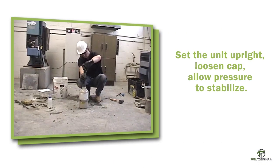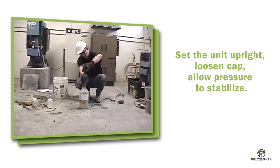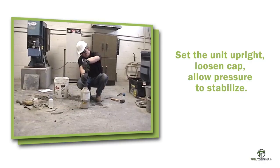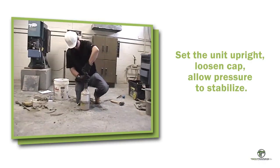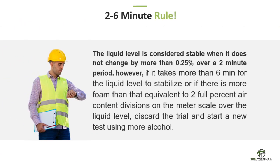Set the unit upright and loosen the cap to allow any pressure to stabilize. Allow the meter to stand while the air rises to the top and until the liquid level stabilizes. The liquid level is considered stable when it does not change by more than 0.25% over a two-minute period. However, if it takes more than six minutes for the liquid level to stabilize, or if there is more foam than that equivalent to two full percentage air content divisions on the meter scale over the liquid level, discard the trial and start a new test using more alcohol.